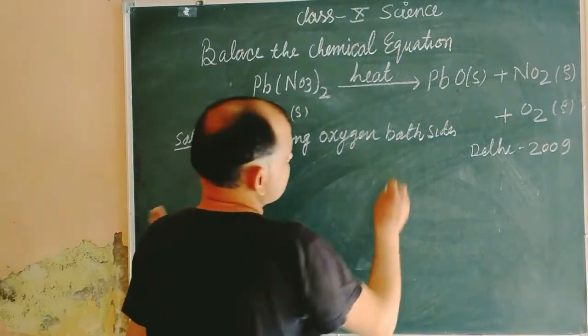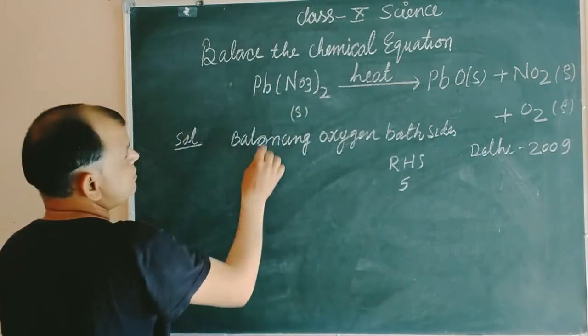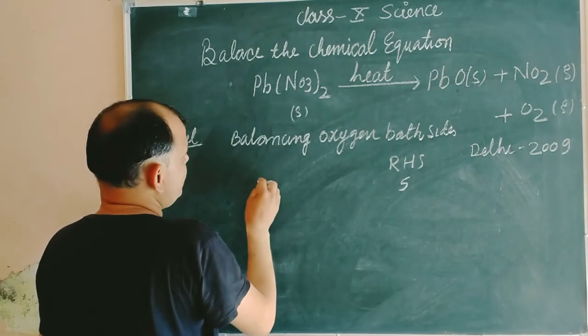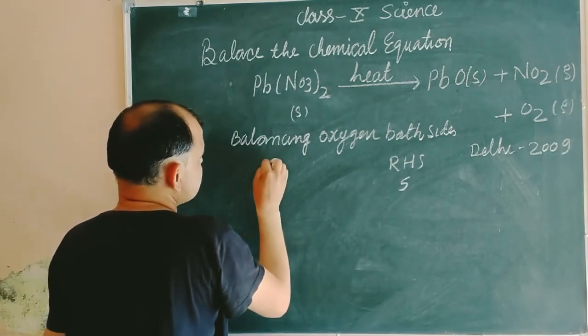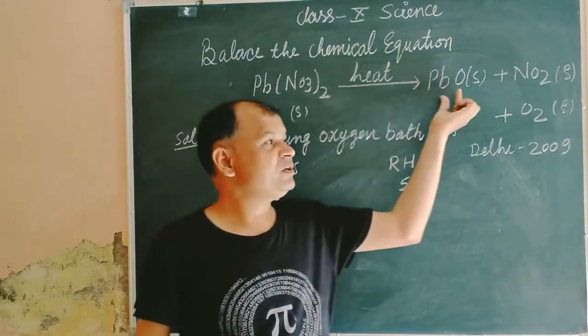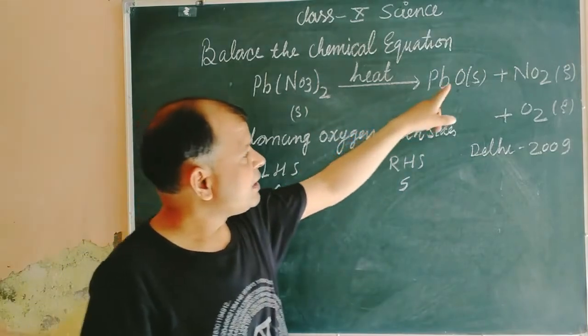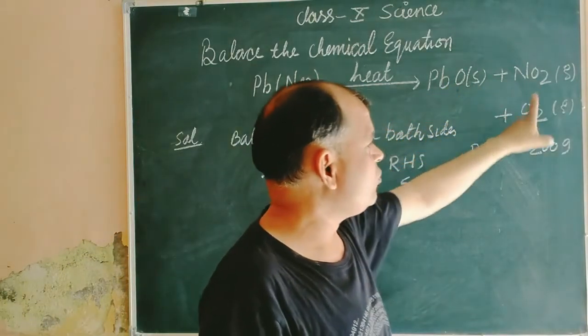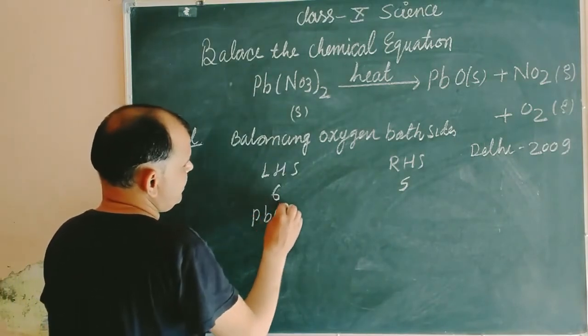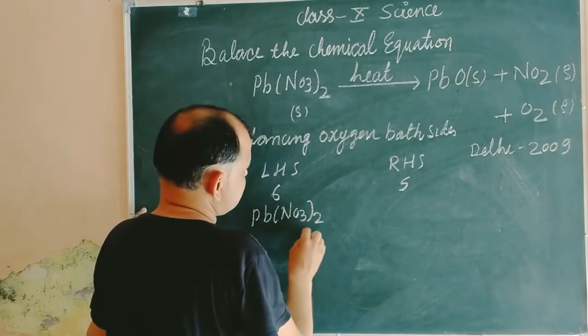And in left side, 2, 3 is 6. So if we multiply PbO by 2 times, we can get 2 plus 2, 4, 4 plus 2, 6. So we write it as Pb(NO₃)₂ whole twice, this is solid state,